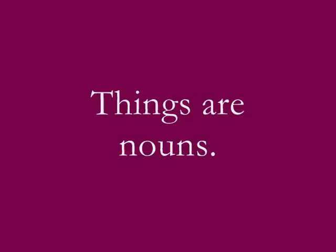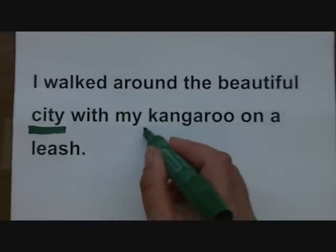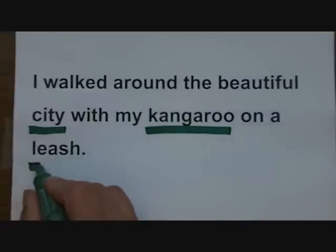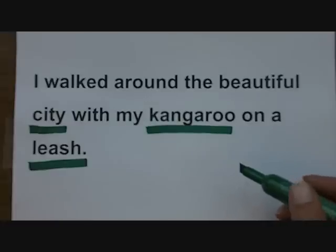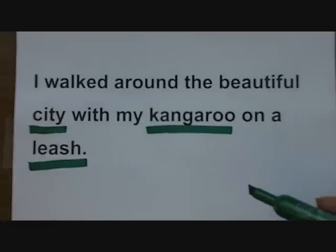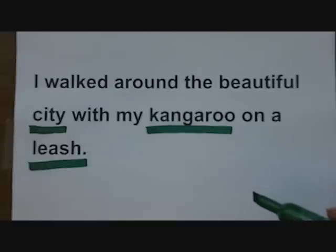Nouns are persons, nouns are places, nouns are also things. Kangaroo is a thing, as is leash — both are nouns. Since you can touch a kangaroo or a leash, we call them concrete nouns. To figure out if something is a noun, close your eyes and see if you can recognize the word with any of your senses. Can you see it? Can you touch it? Can you smell it? Can you hear it? Can you taste it? If so, it's a noun.